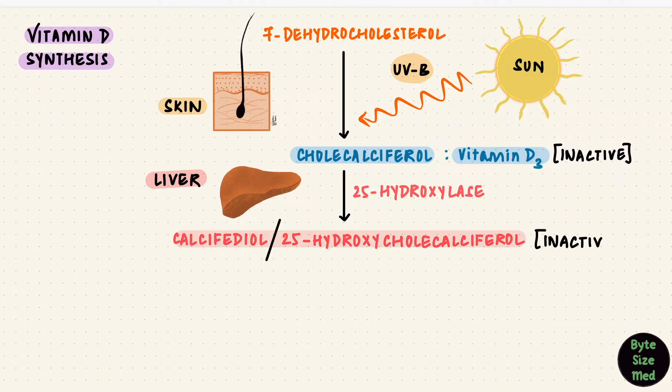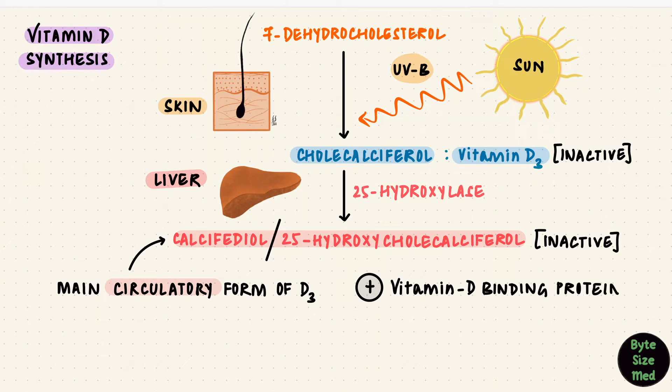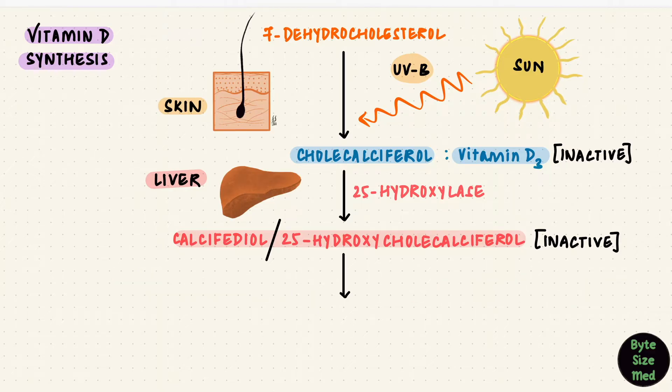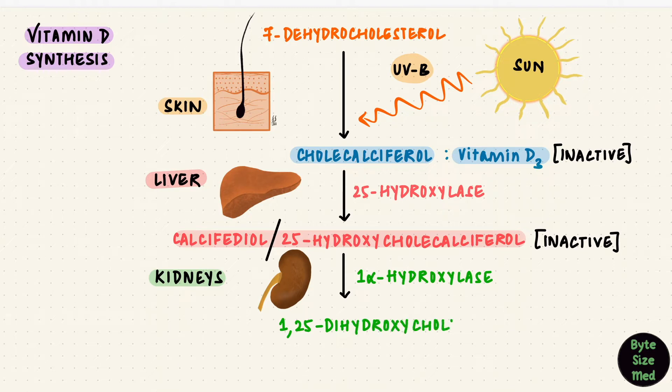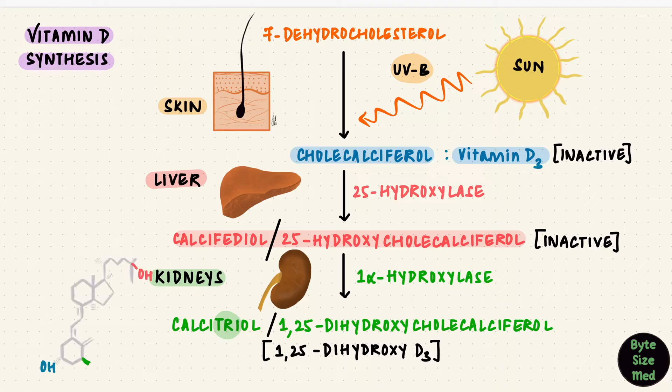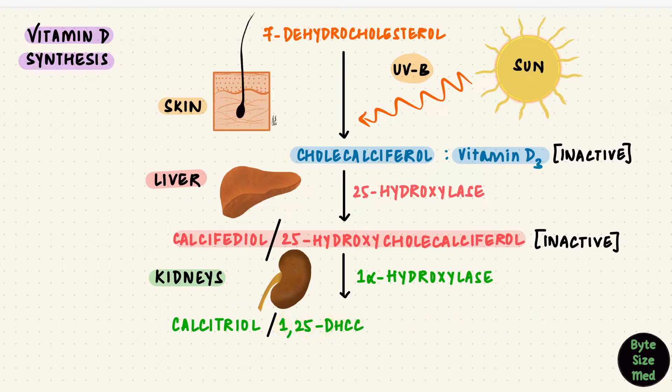It's still inactive, but this is the main circulatory form of vitamin D in plasma and most of it is bound to an alpha globulin vitamin D binding protein. Since it's still not active, we need one more organ, the kidney. This is a very important step. We add another hydroxyl group at the first position. That's by 1-alpha hydroxylase, giving us 1,25-dihydroxycholecalciferol or 1,25-dihydroxy-vitamin D3 or calcitriol. There were two hydroxyl groups and now there are three, so it's calcitriol. This calcitriol is active vitamin D3.